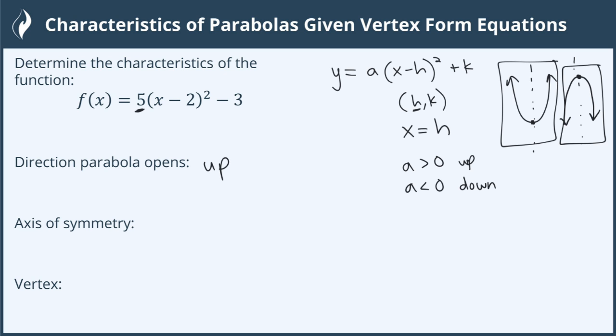If we find the vertex next, h would be 2 because remember it's x minus h, and then k would be negative 3. So there's our vertex (2, -3), and the axis of symmetry would be x equals this point right here, so x equals 2. Those are the characteristics for this function.